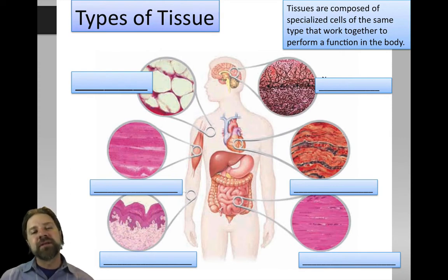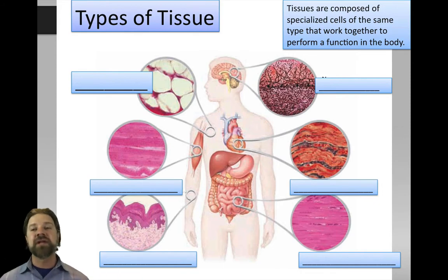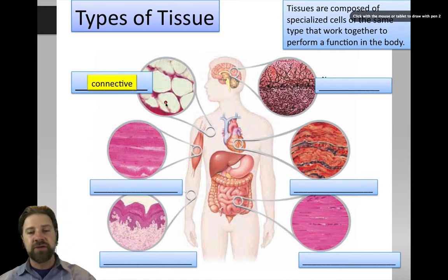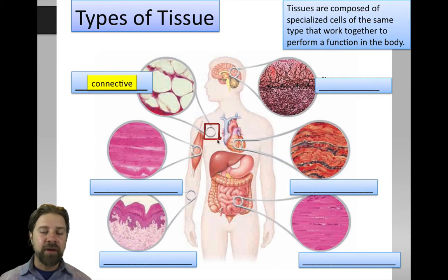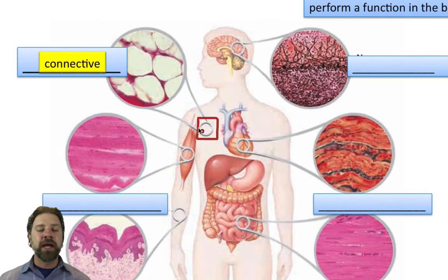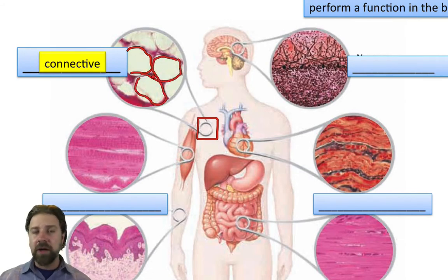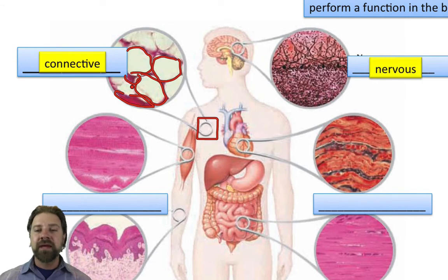Tissues are composed of specialized cells of the same type working together to perform a function. Connective tissue, for example, contains large white fat cells (adipocytes) along with other cellular contents visible in the red portions. Next, nervous tissue — zooming into the brain — shows neurons, the nerve cells, appearing as black structures among the red background.